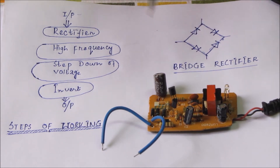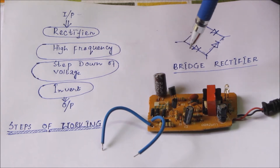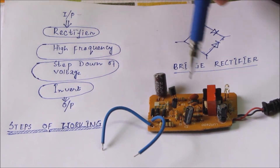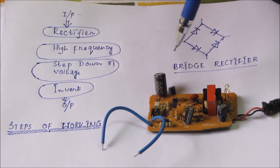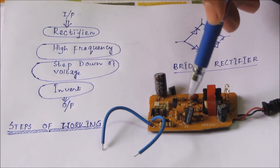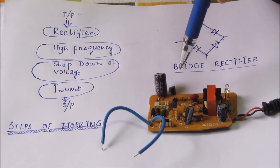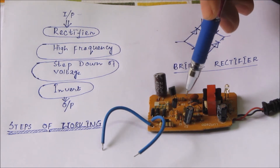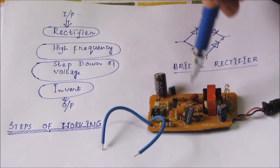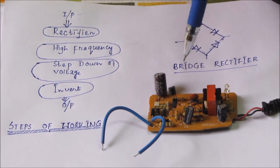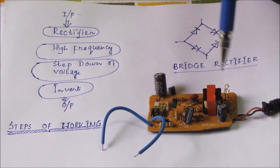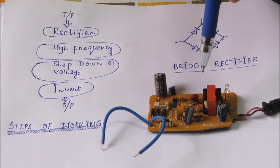Through these two transistors, the on-off switching process enhances the frequency of the signal, and the DC signal is converted into a high-frequency AC signal. It then passes through two ceramic capacitors which form a power factor correction circuit — essentially filters — leading to the pulse transformer. This is a 220 to 5 or 6 volt pulse transformer.